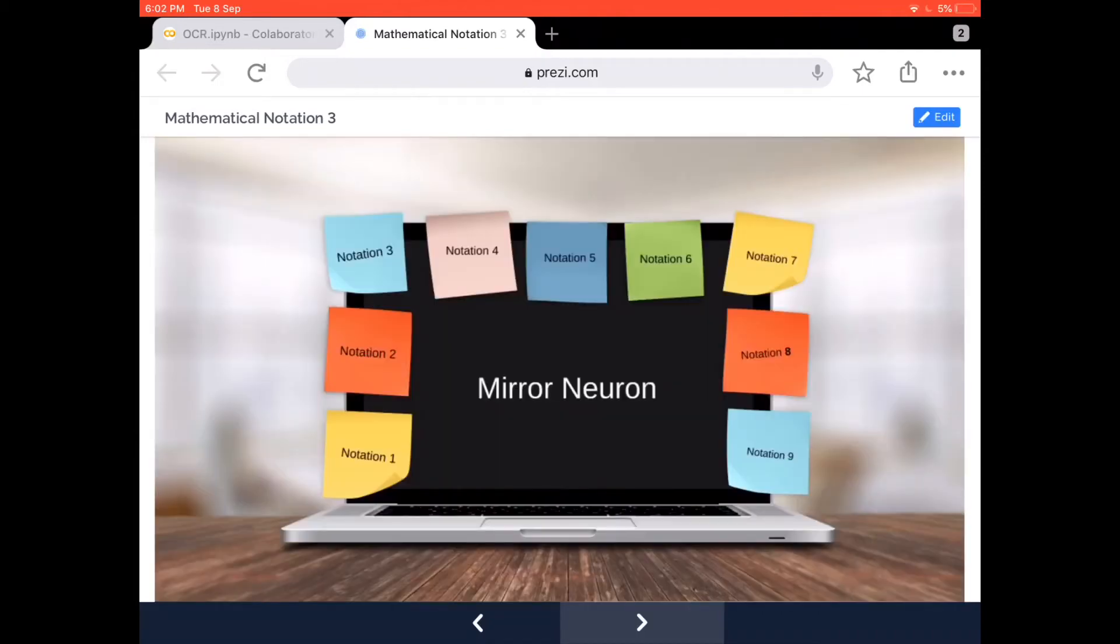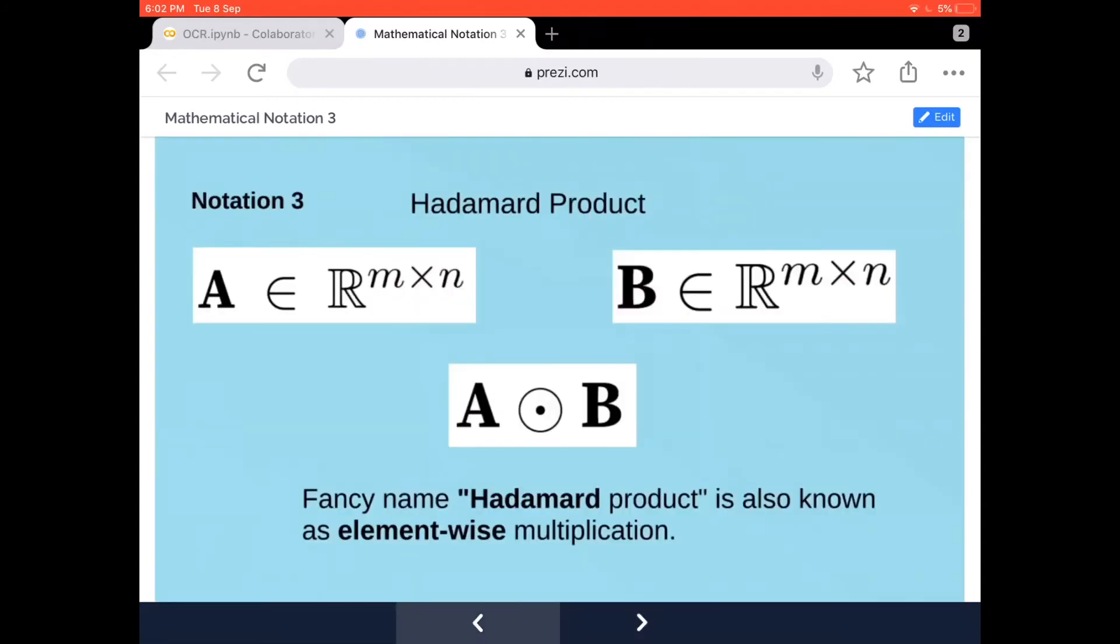I believe you learned something new today and are now familiar with the notation of A element-wise multiplication, which is A dot B with a dot in between. Next, maybe we'll cover the dot product. I hope you learned something new today. Until then, have a great day.